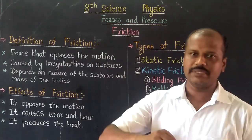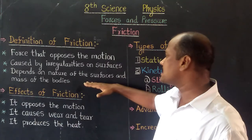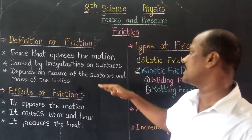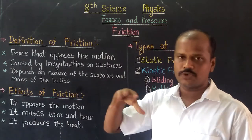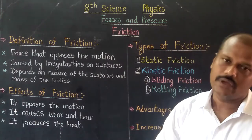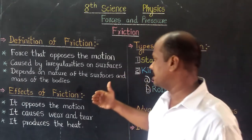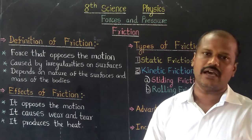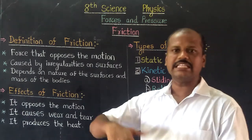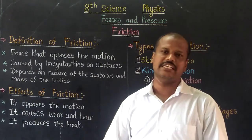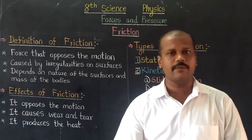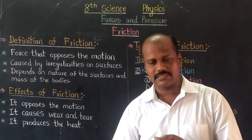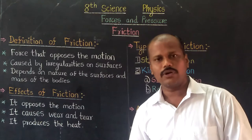So the friction depends on the natural surface — smooth surface and rough surface. On a smooth surface the friction is lower, and on a rough surface the friction is higher. For example, if you go by a cycle, the tire has friction.